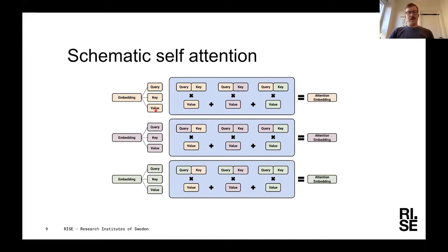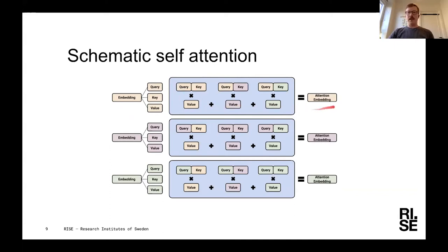You multiply that weight by the value vector also produced from the embedding, and take the sum of these weighted value vectors. So for each word, you get a weighted sum over all other words in the sequence by these vector operations — and that is your attention. The key takeaway is that you take a word and check how it relates to all the other words in the input sequence.